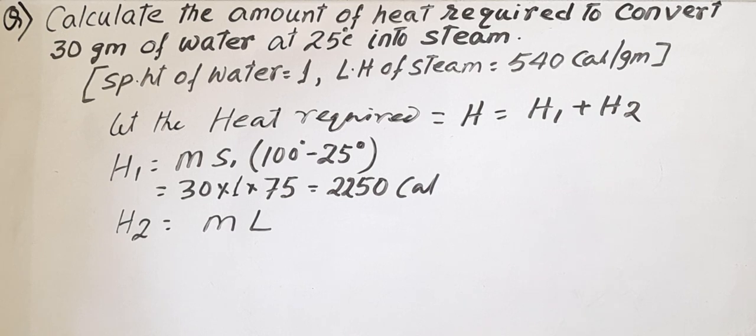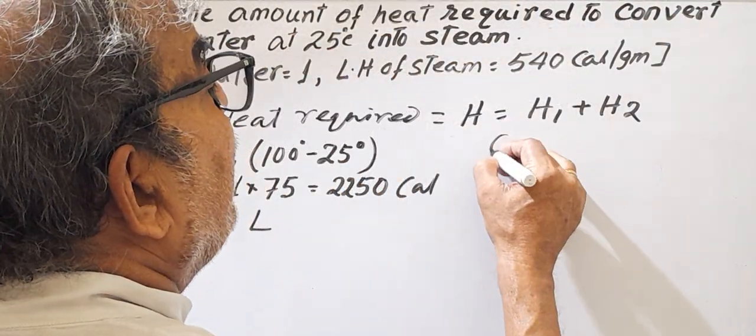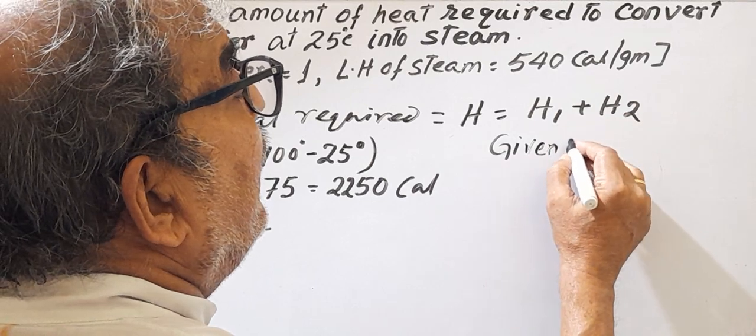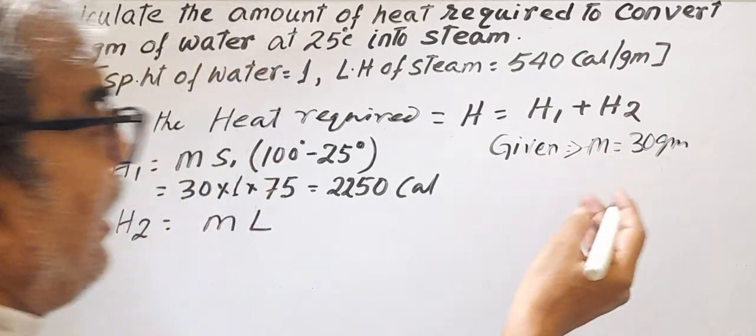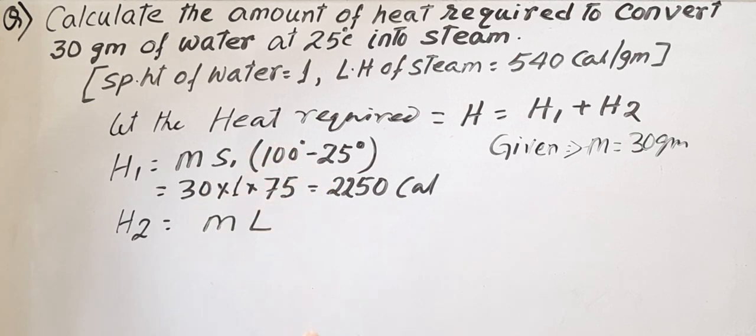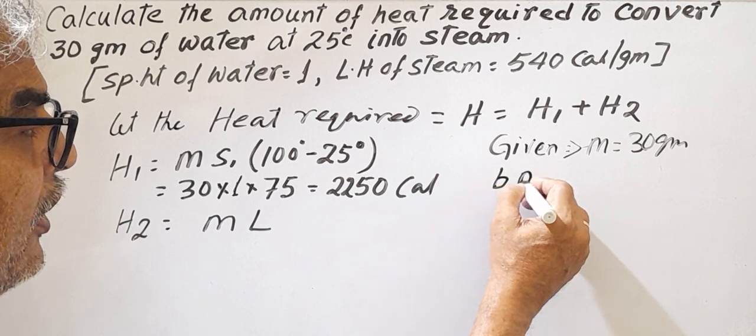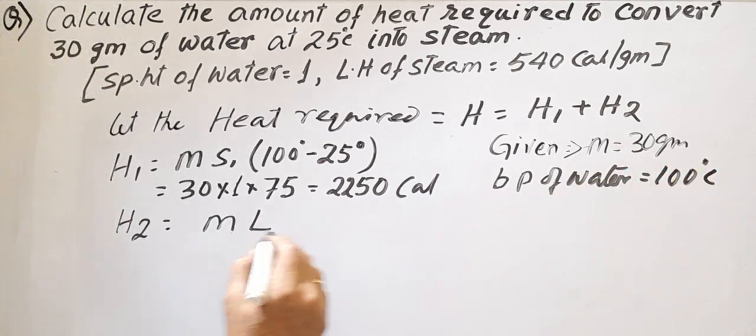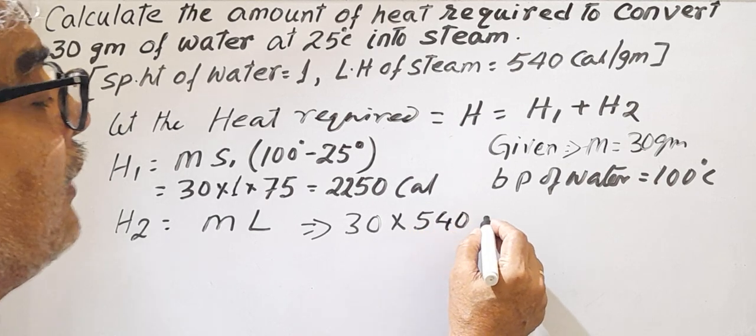The mass is 30 grams. Given: M equals 30 grams, initial temperature T1, and boiling point BP of water equals 100 degree centigrade. Now M×L equals 30 grams into 540, which equals 16,200 calories.